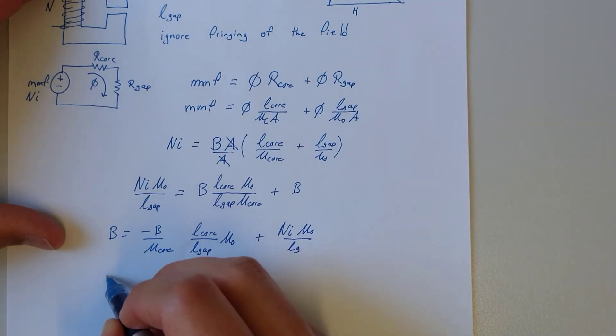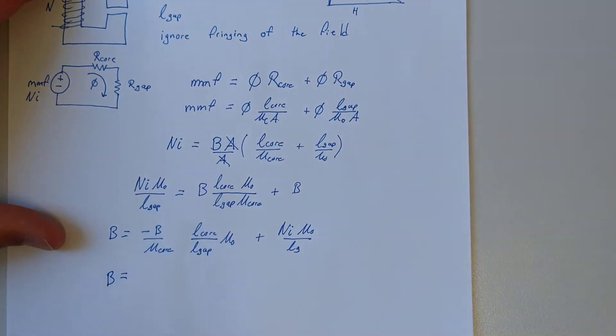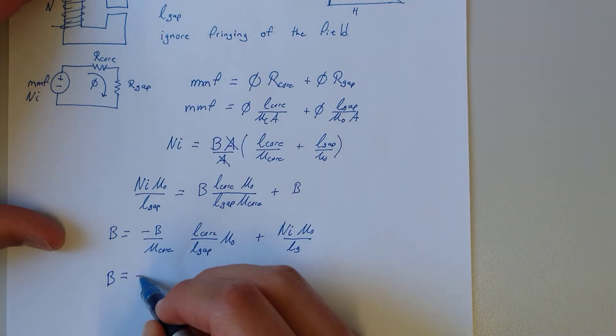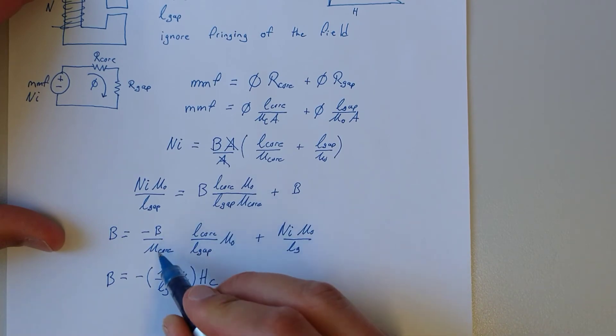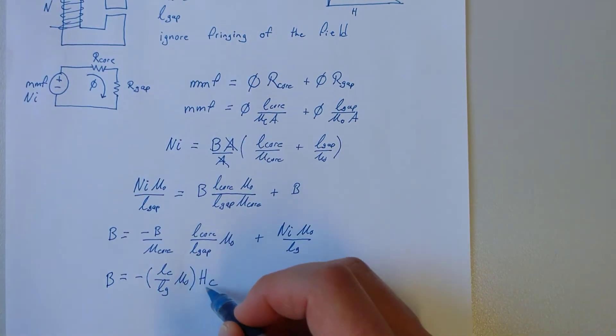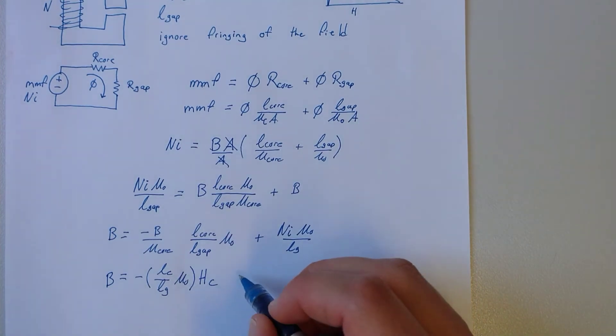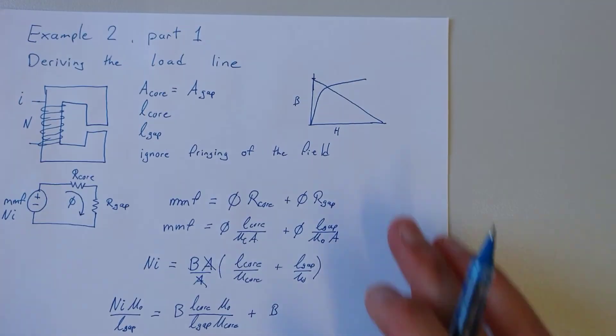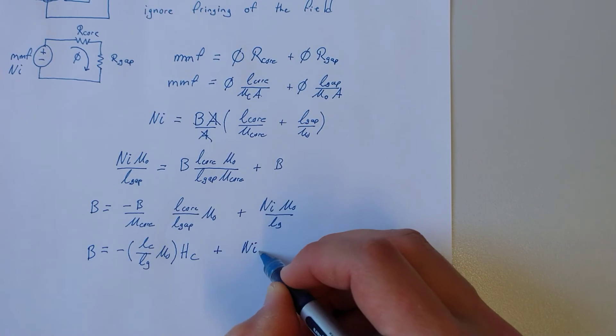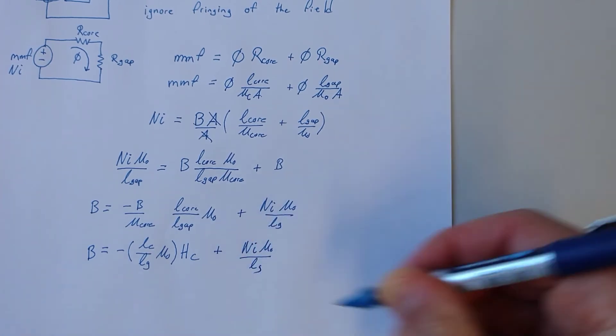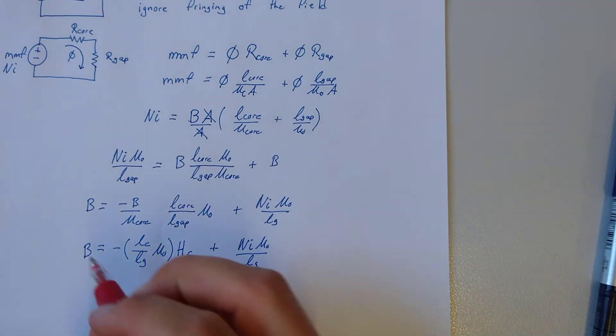One more rearrangement and we'll be able to see the load line: B equals minus LC over LG times mu naught H over mu core, which gives us H for the core, and that's the horizontal axis of our plot, plus NI mu naught over LG. Note that this last term is constant. So that is our load line equation.